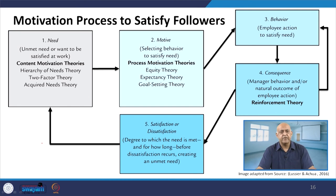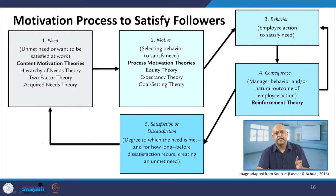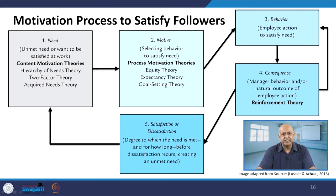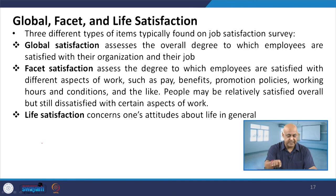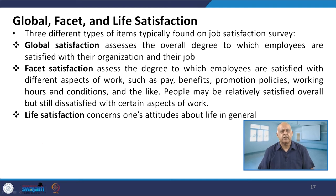This motivation process will be applicable for a period of time. After a certain period, suppose a person moves from category A1 to category A2 — in A2 the whole process of motivation will change, because the need will change, motive will change, behavior will change, consequences will change, and satisfaction levels will change. When we talk about job satisfaction concepts, we talk about global satisfaction, facet satisfaction, and life satisfaction.